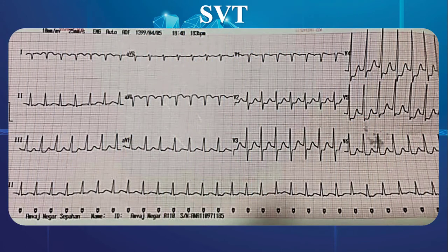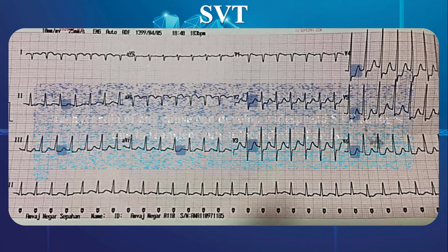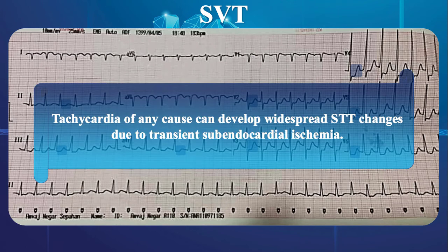This EKG strip demonstrates supraventricular tachycardia. In spite of narrow QRS complexes, primary widespread ST depressions due to high cardiac rate are present. It must be noted that tachycardia of any cause can develop widespread STT changes due to transient subendocardial ischemia.